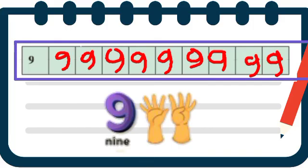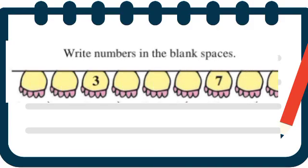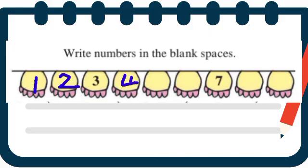Write the numbers in the blank spaces. 1, 2, 3 is already given. 4, 5, 6, 7 is already here — 8 and 9. Asha paddhatiने tumhala 1 to 9 paryantache digits lihayache aahet.